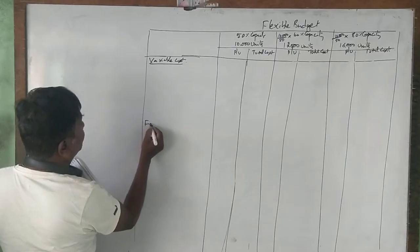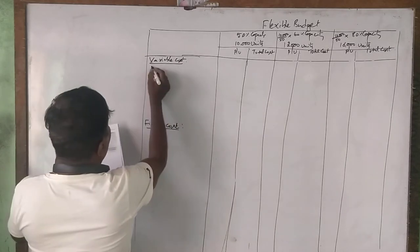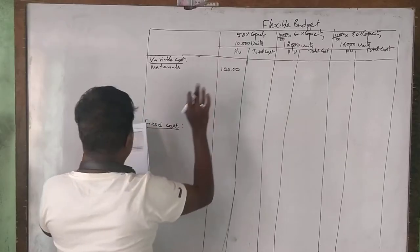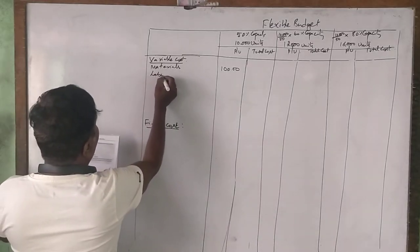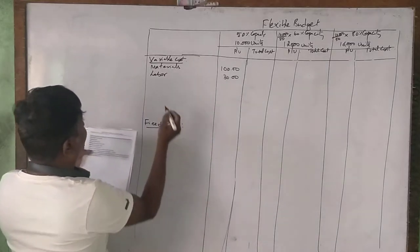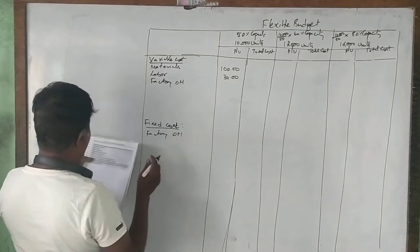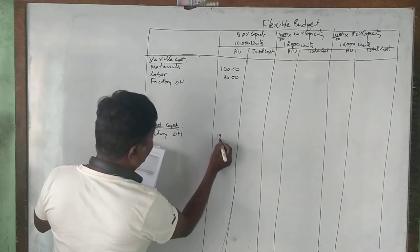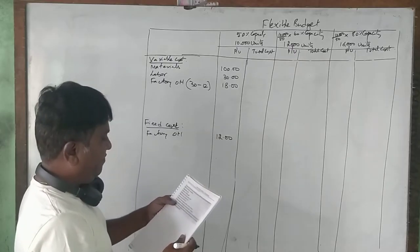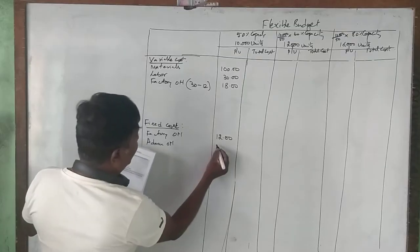The cost data at 50% capacity: material is 100 rupees per unit (variable), labor is 30 rupees per unit (variable). Factory overhead is 30 rupees — 12 rupees fixed and 18 rupees variable. Administration overhead is 20 rupees — 10 rupees fixed and 10 rupees variable.